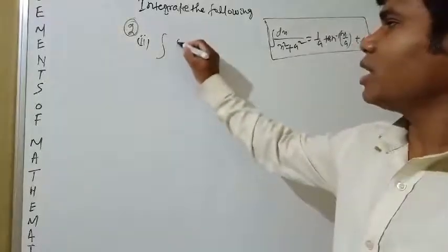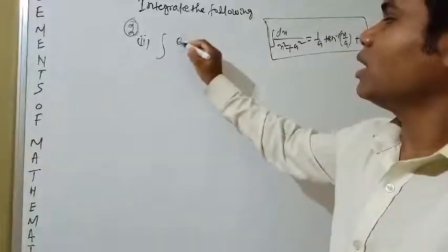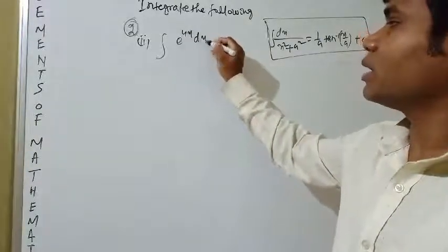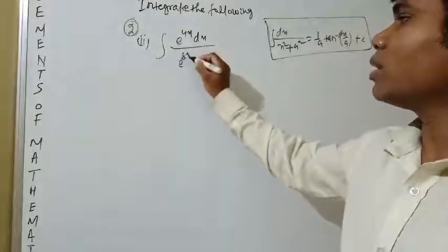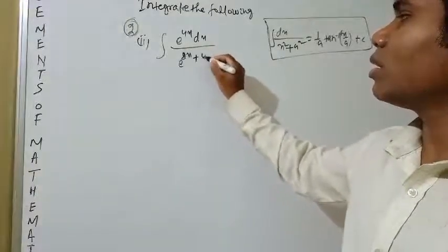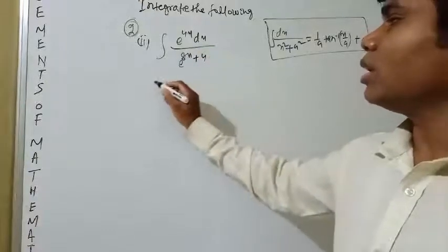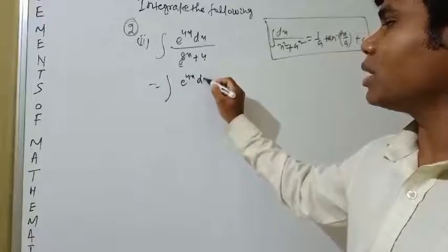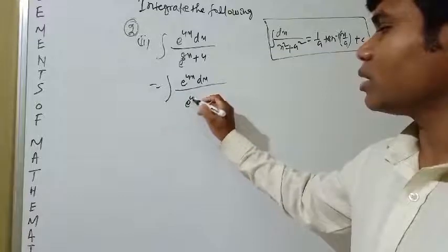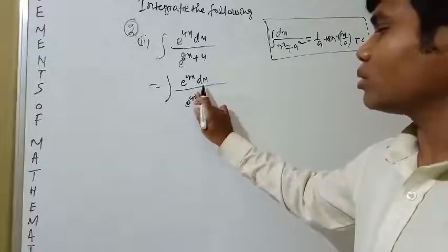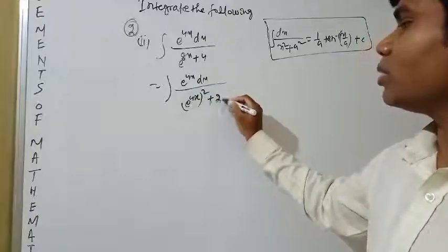The next question is: integration of e^(4x) dx divided by e^(8x) + 4. We can rewrite this as ∫e^(4x) dx / [(e^(4x))² + 2²], since e^(8x) = (e^(4x))² and 4 = 2².